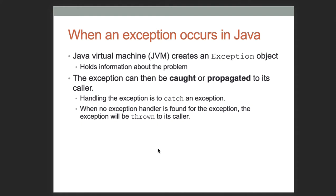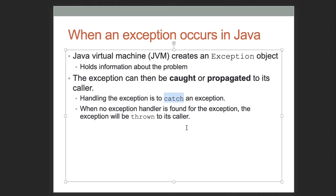When these exceptions occur, Java creates an exception object that holds information about the problem. We can do one of two things: we can catch it and deal with it immediately, or we can propagate it to the caller — meaning we pass it up to the method that called the method we're currently in. We handle the exception with something called a catch block, and if we're propagating it, it is thrown to its caller.